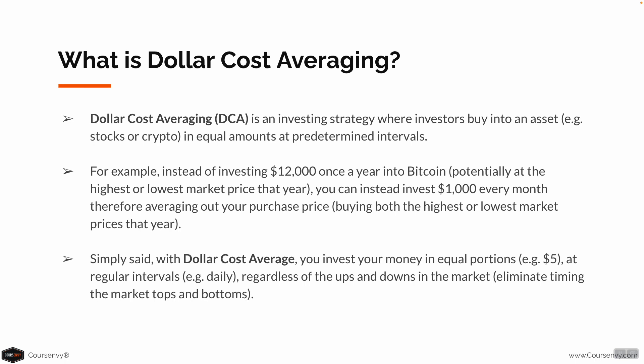Dollar Cost Averaging, or DCA, is an investing strategy where investors buy into an asset, for example stocks or crypto, in equal amounts at predetermined intervals. For example, instead of investing $12,000 once a year into Bitcoin, potentially at the highest or lowest market price that year, you can instead invest $1,000 every month, therefore averaging out your purchase price, or cost basis, buying both the highest and lowest market prices that year.